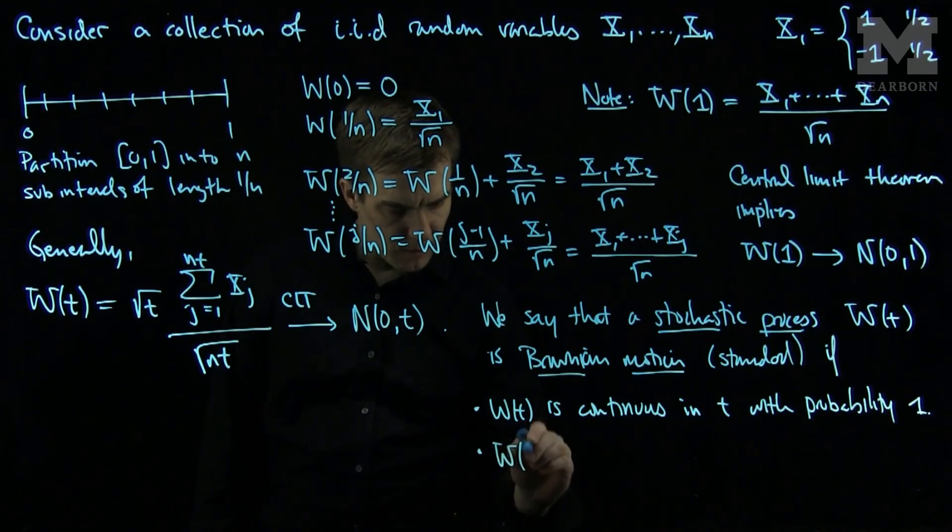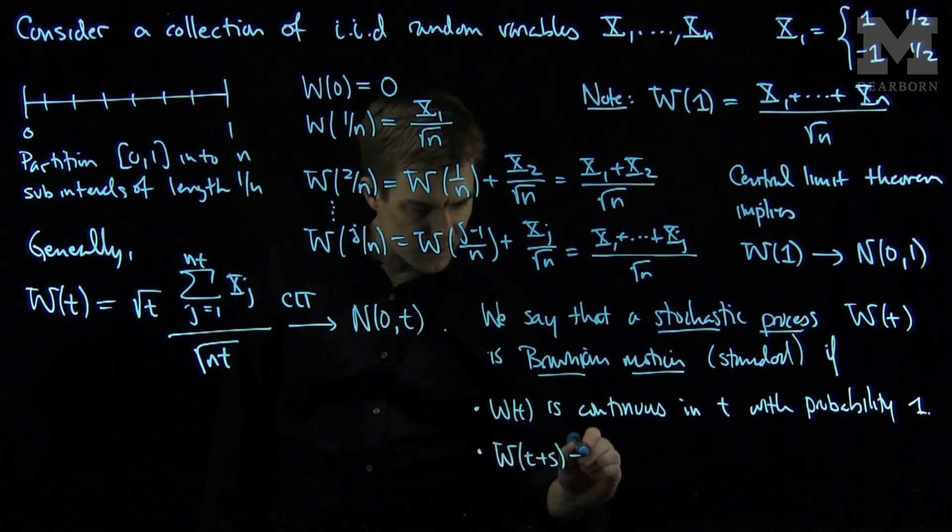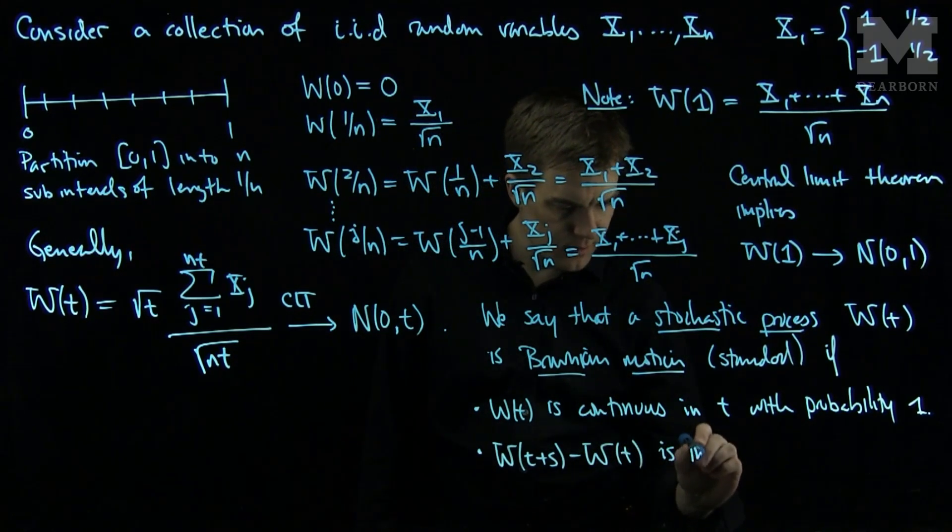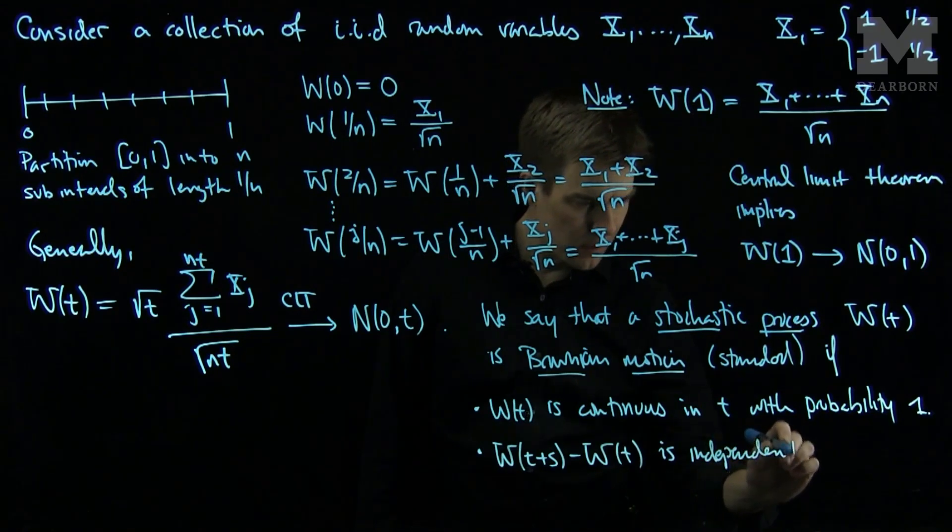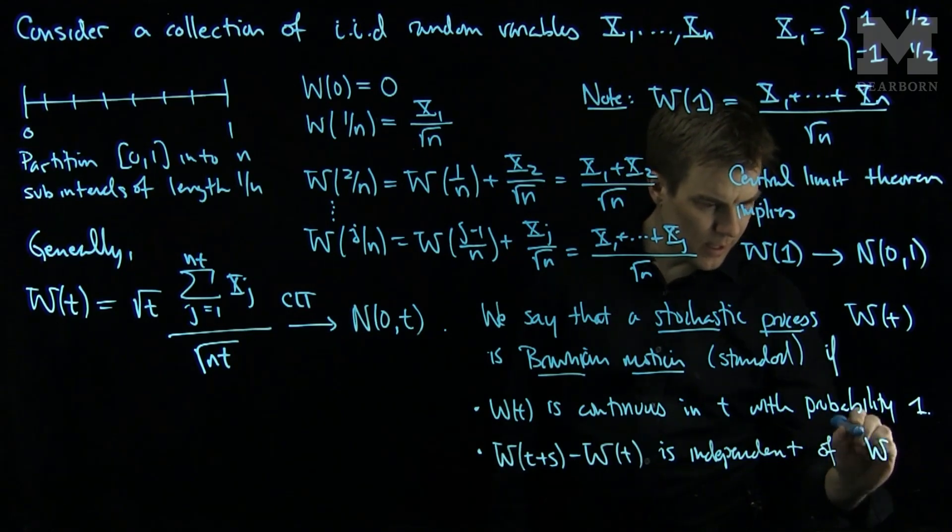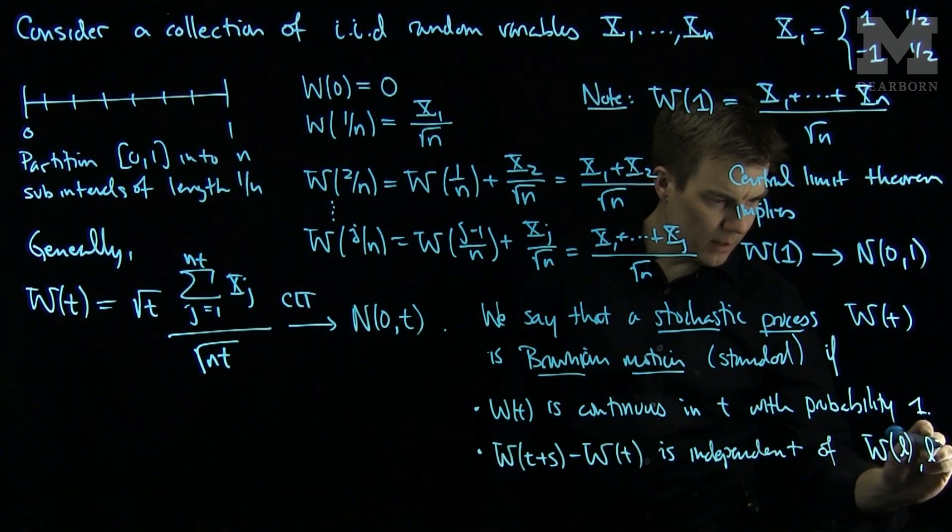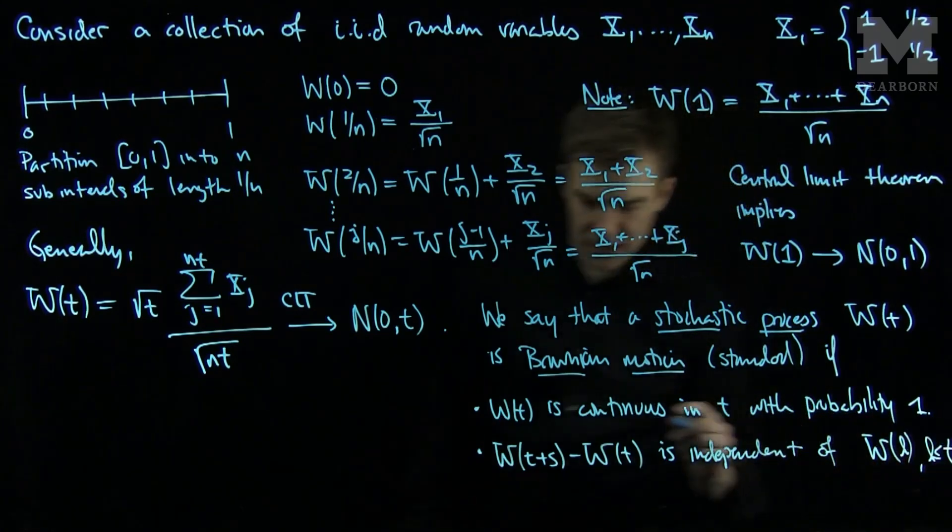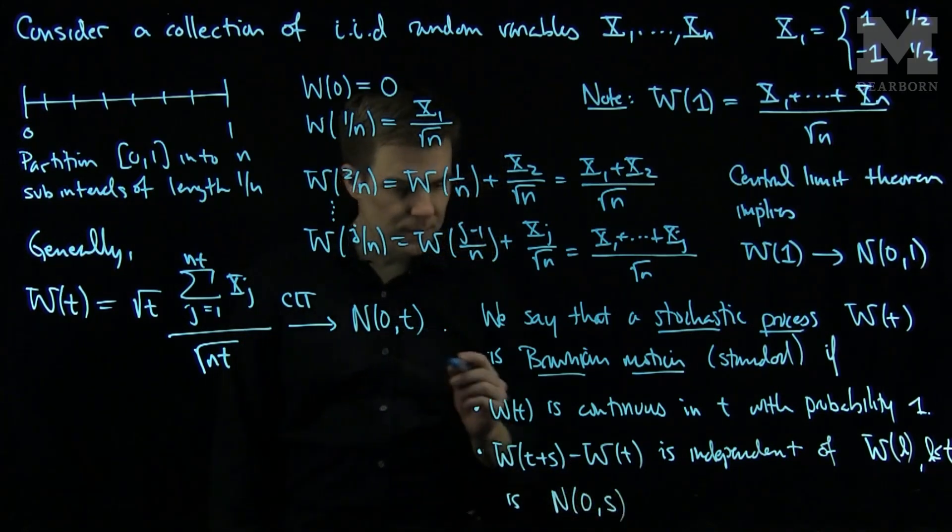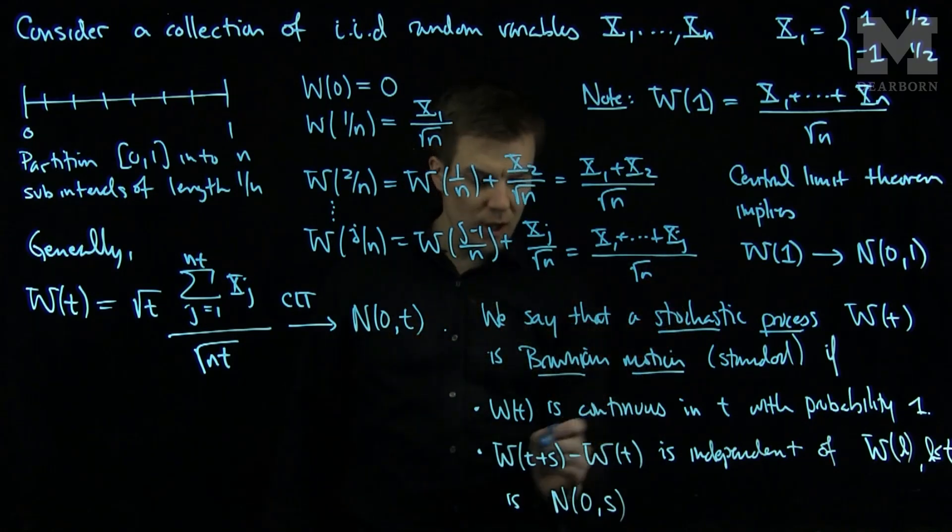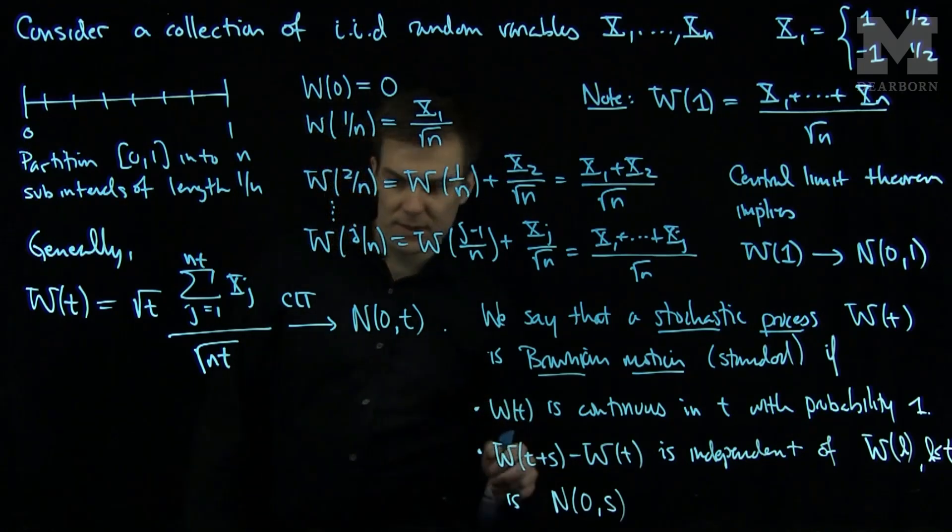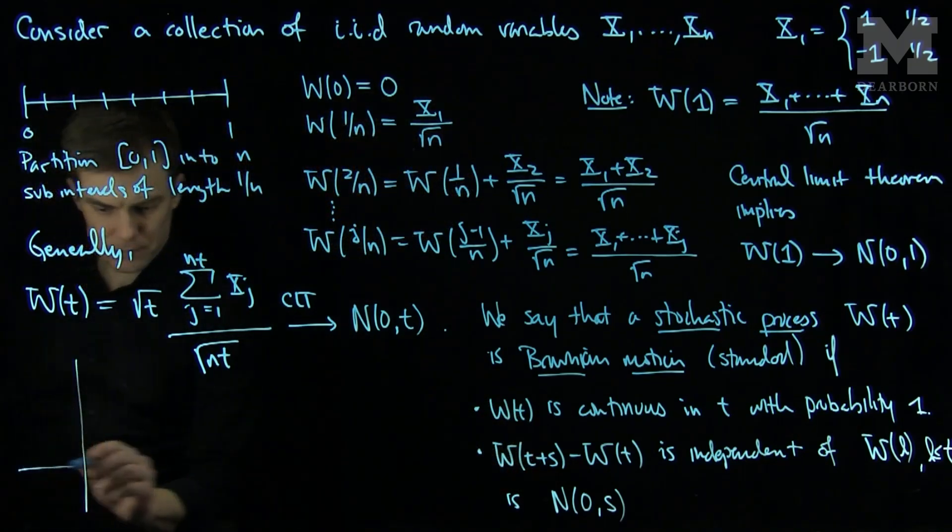We'll call it standard Brownian motion if wt plus s minus wt is independent of all the info in wl for l less than or equal to t and is N(0,s). No matter what t is, as long as the difference in the variables is s, the Brownian motion increment will be normally distributed with variance s.